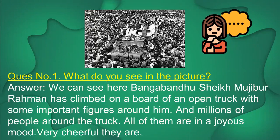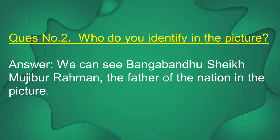Here are three questions. Question number one: What do you see in the picture? We can see here Bangabandhu Sheikh Mujibur Rahman has climbed on board an open truck with some important figures around him and millions of people around the truck. All of them are in a joyous, very cheerful mood. This is the answer to question number one.